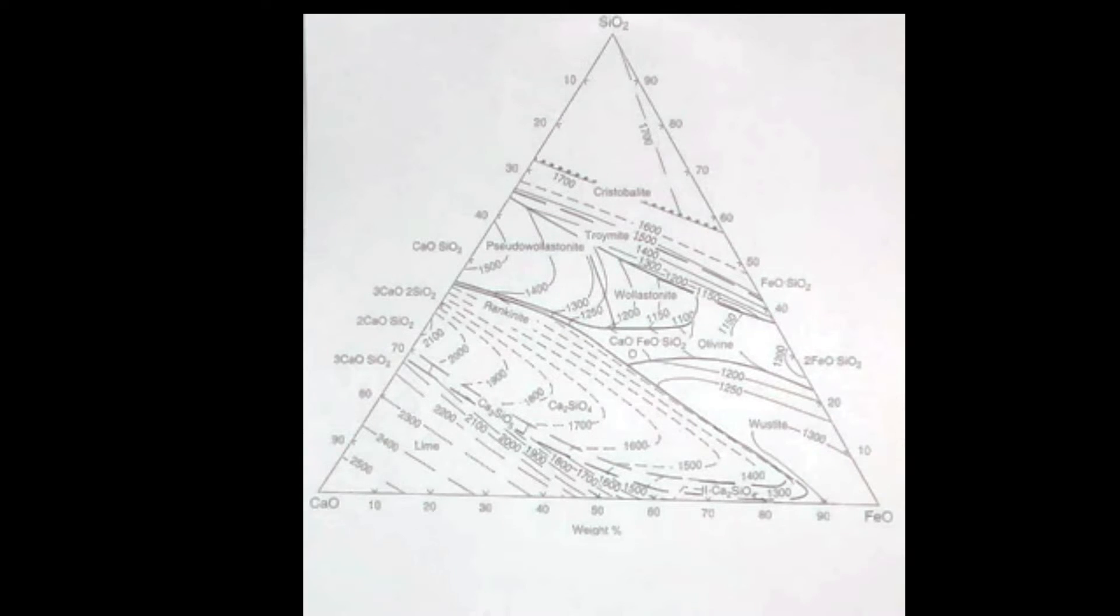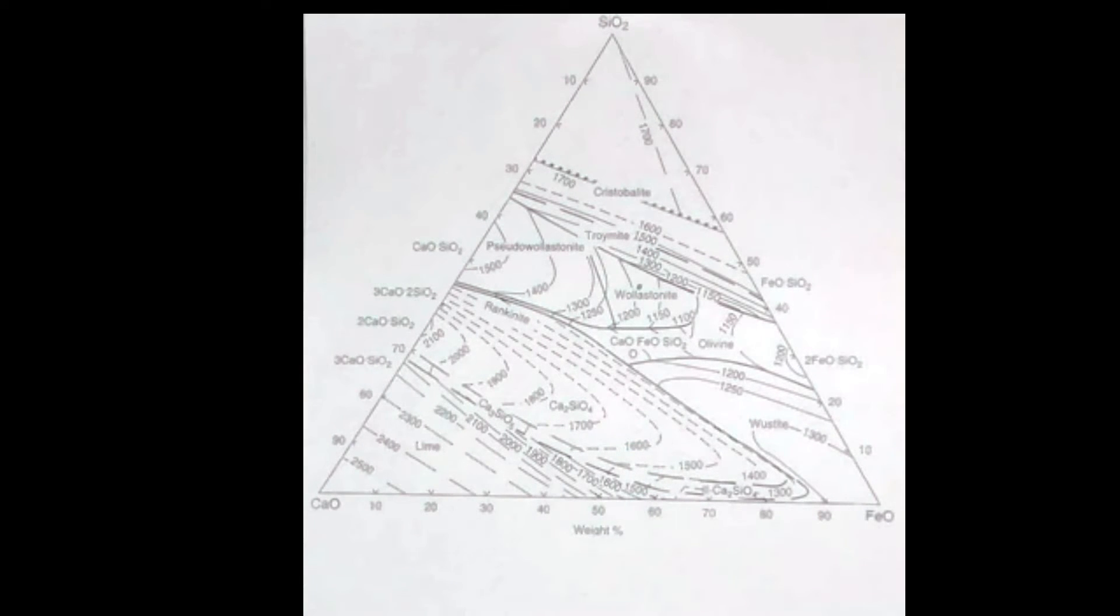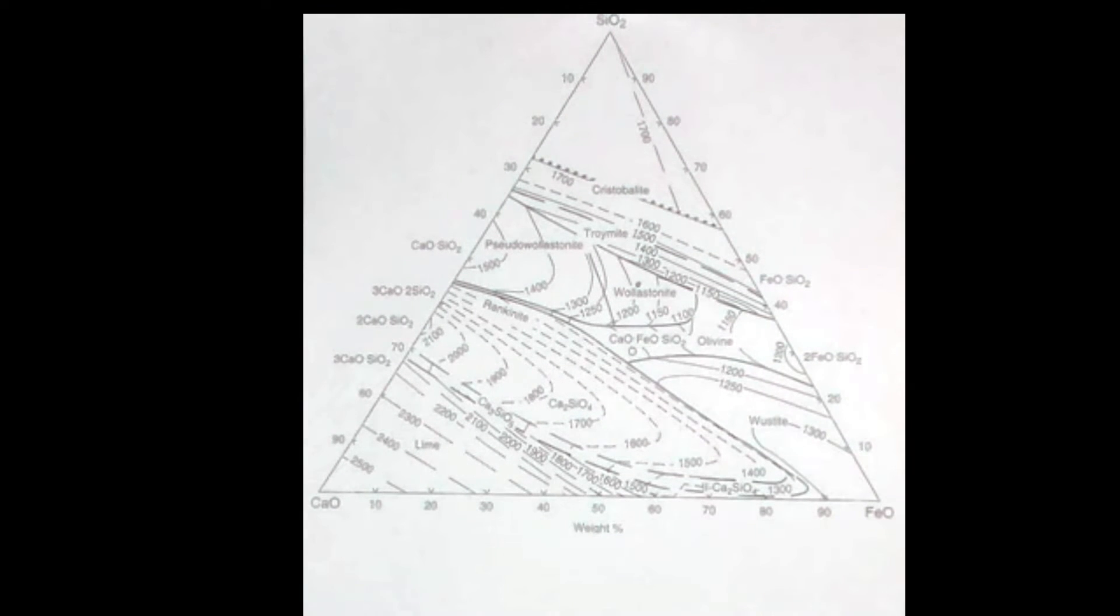For the ceramic ternary phase diagram below, let's consider a point. In order to determine the amount of CAO, SiO2, or FeO, we will use the method of line length to determine the composition percent of each.